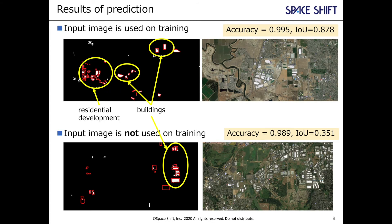Here we show the results of prediction. For the upper half, the input SAR image is used for training datasets and the IOU shows a very high value. For the lower half, the input SAR image is not used for training datasets, but still achieves a good IOU of about 0.35. In both cases, we are successful in detecting buildings and residential developments. However, crop growth on fields is misdetected as buildings, and buildings with flat roofs are also misdetected due to low reflection.